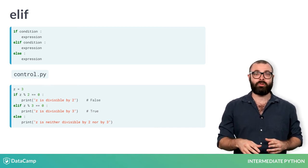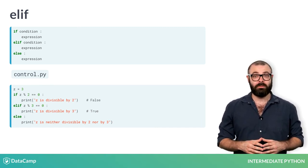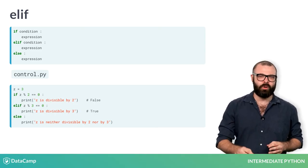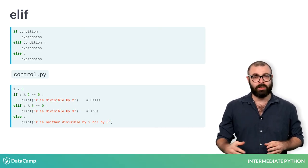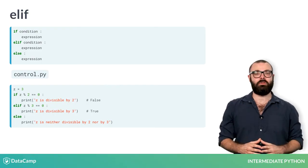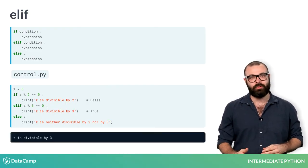Can you tell what this script will print out if you run it? If z equals 3, the first condition is false, so it goes over to the next condition. This condition does hold, so the corresponding print statement is executed.